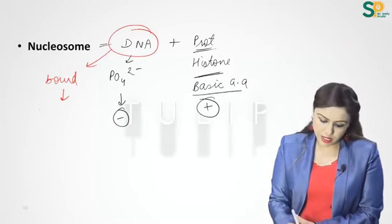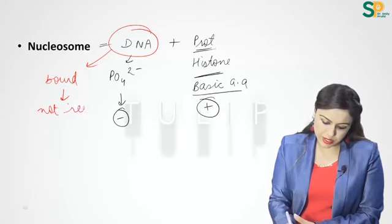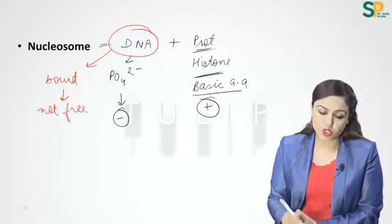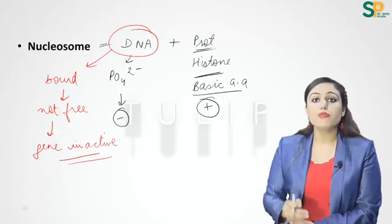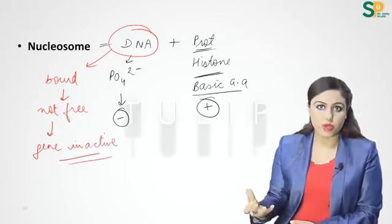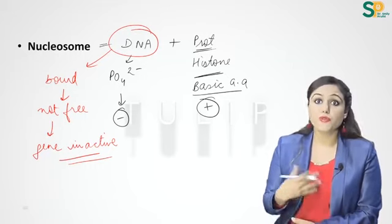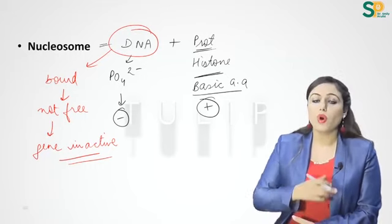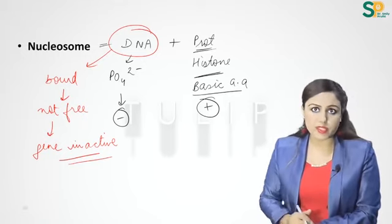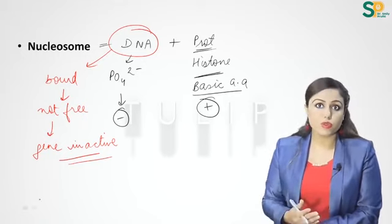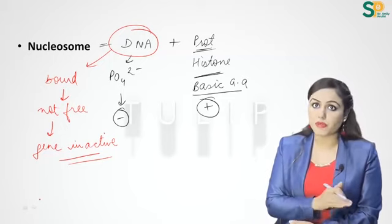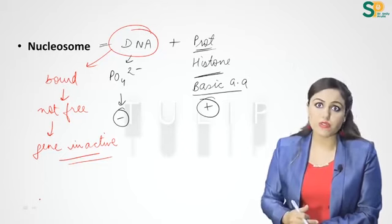When DNA is bound to histone proteins in nucleosomes, the DNA is not free and the gene is inactive. To activate the gene, we separate the DNA from the proteins so the DNA is free, allowing transcription and translation to occur — this is regulation of gene expression.